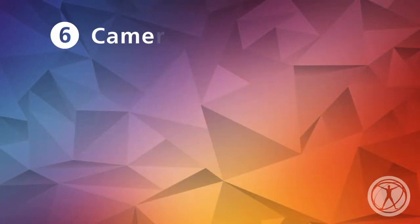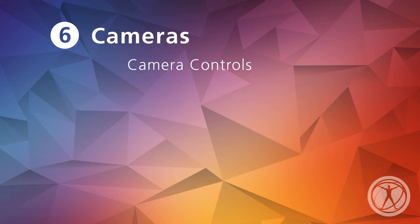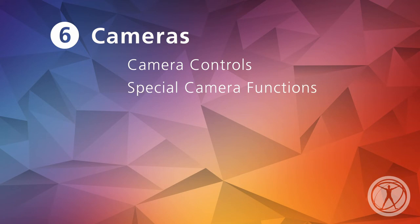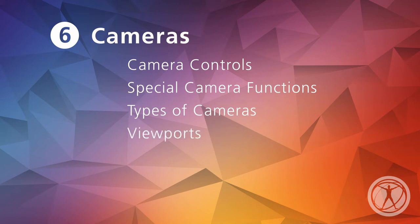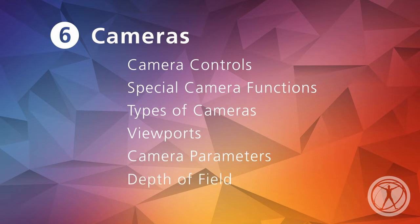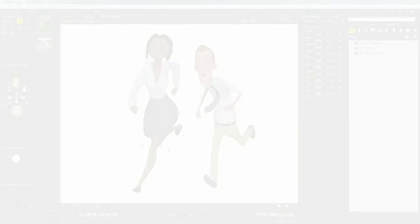Welcome to Lesson 6, Cameras. We'll start off by going over the camera controls, including different ways of interacting with cameras. Then we'll look at special camera functions found in different parts of the interface. Next, we'll understand the different types of cameras and what they're used for. After that, we'll learn how to work with multiple viewports. Finally, we'll explore unique camera parameters and create cinematography effects like depth of field. Let's play with cameras!